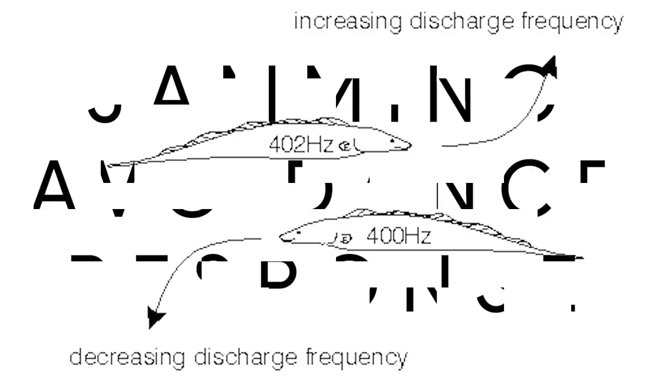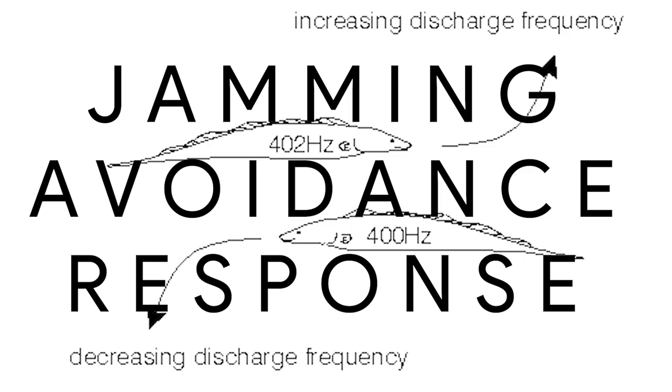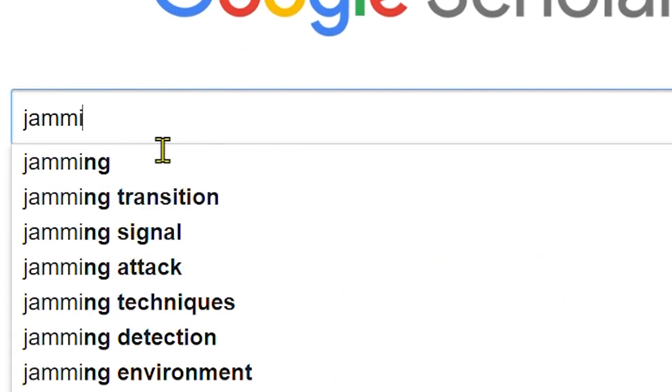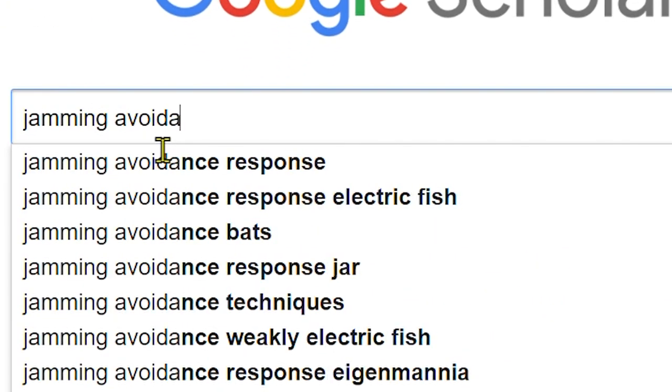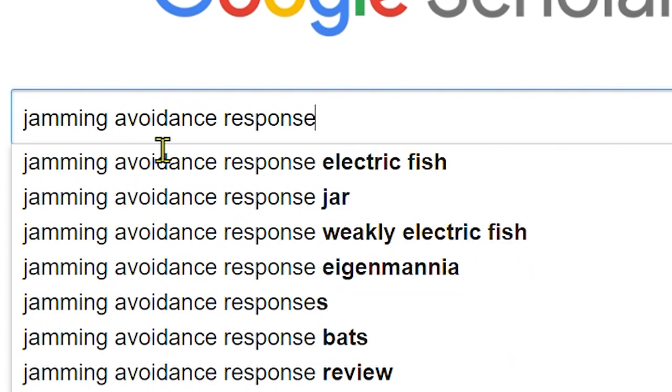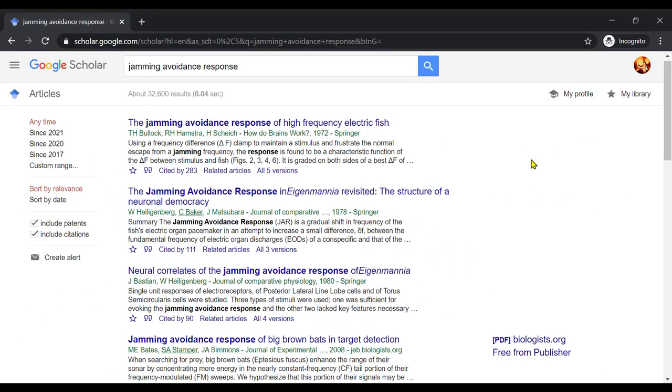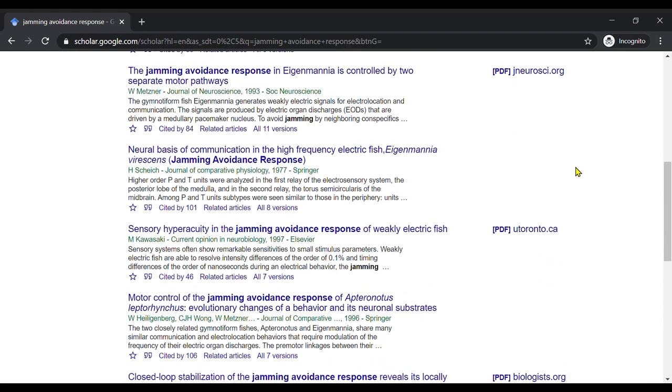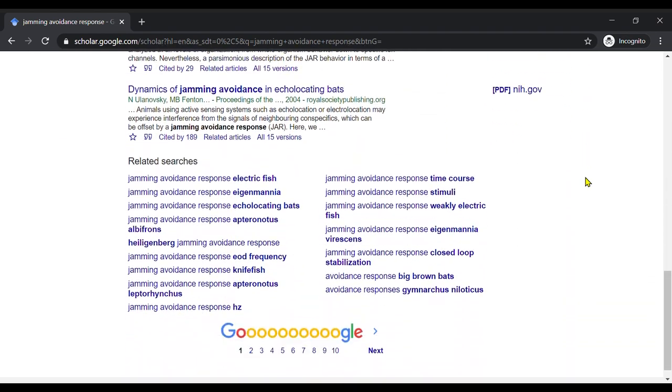This is called the jamming avoidance response. Now this may seem a simple mechanism but it is one of the most complex responses in animals. Also it's not that simple changing its frequency. There are detailed complex studies on jamming avoidance responses.